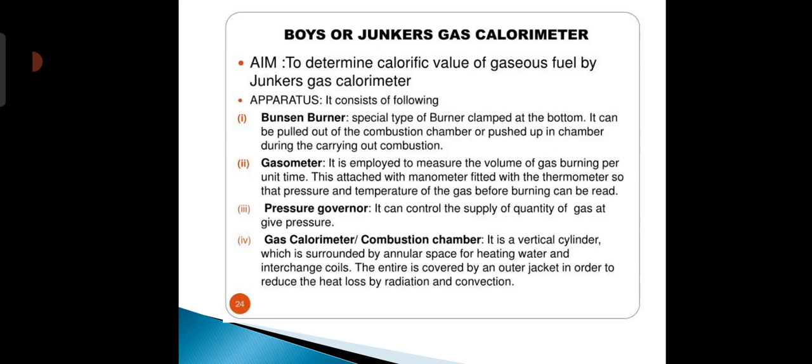Next, the pressure governor. It can control the supply of quantity of gas at given pressure. The gas calorimeter or combustion chamber is a vertical cylinder which is surrounded by the annular space for heating water and interchange coil. The entire apparatus is covered by the outer jacket in order to reduce the heat loss by radiation and convection.